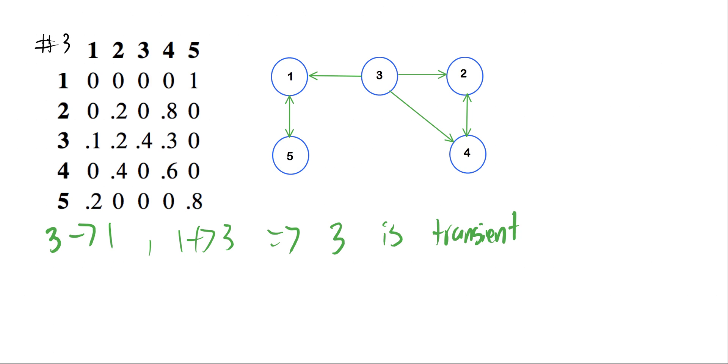That being said, we can see here that 1 only goes to 5, and 5 only goes to 1 and 5. So 1 and 5 is a closed set. We can see this here from the Markov chain, and we also can see here from our graphical representation.